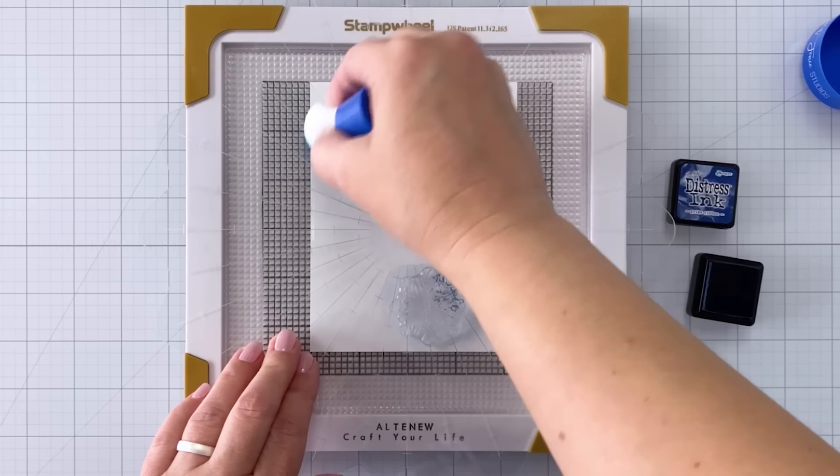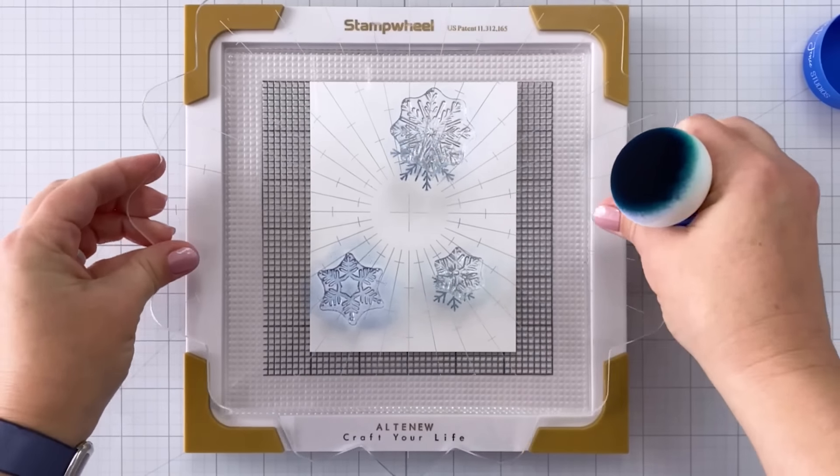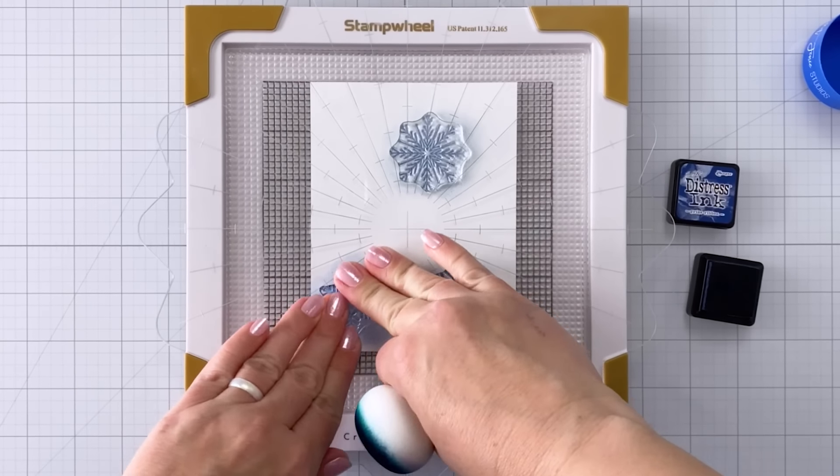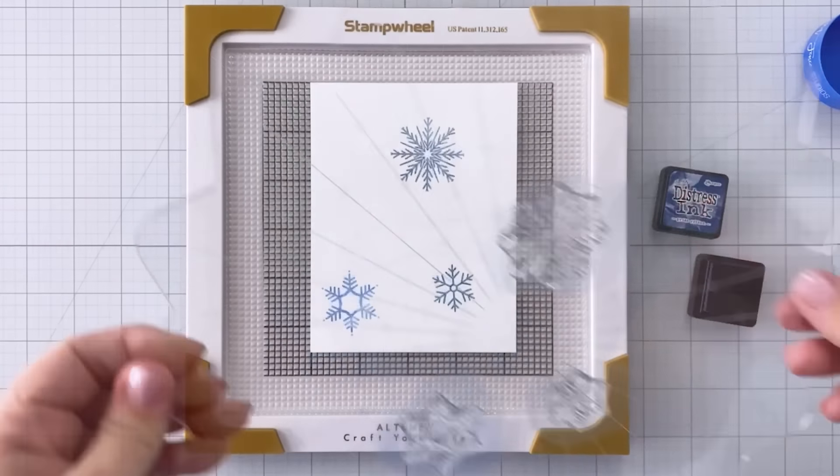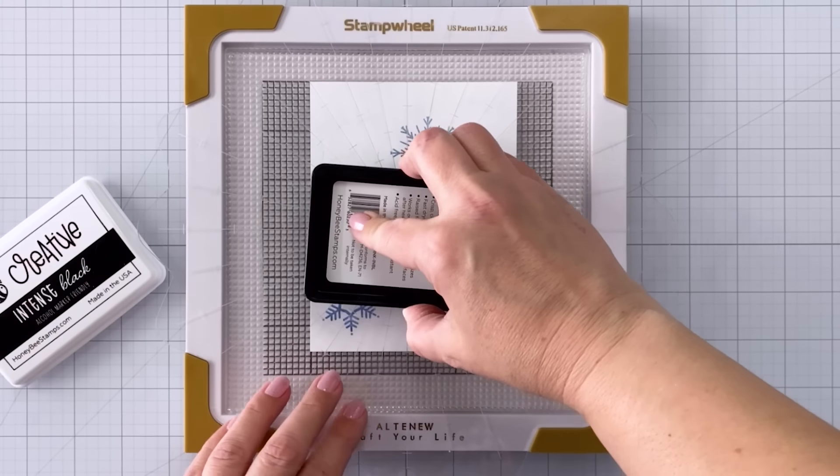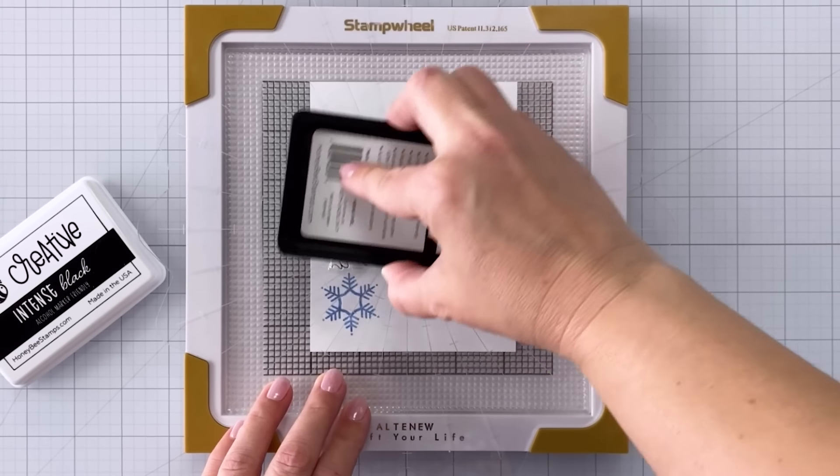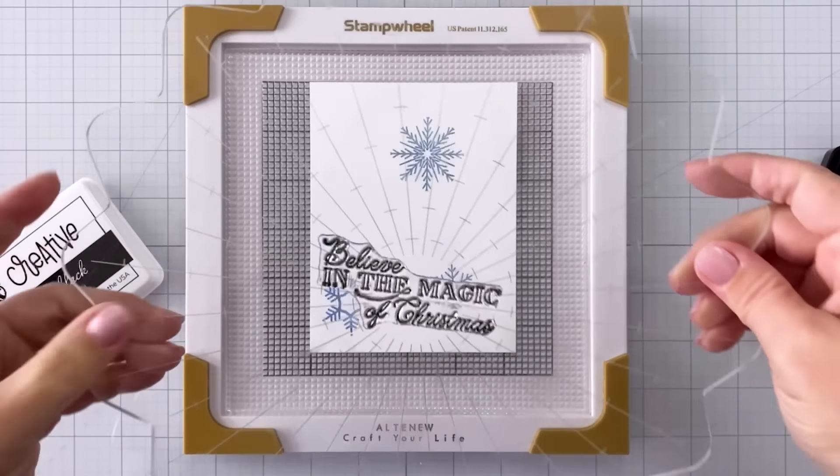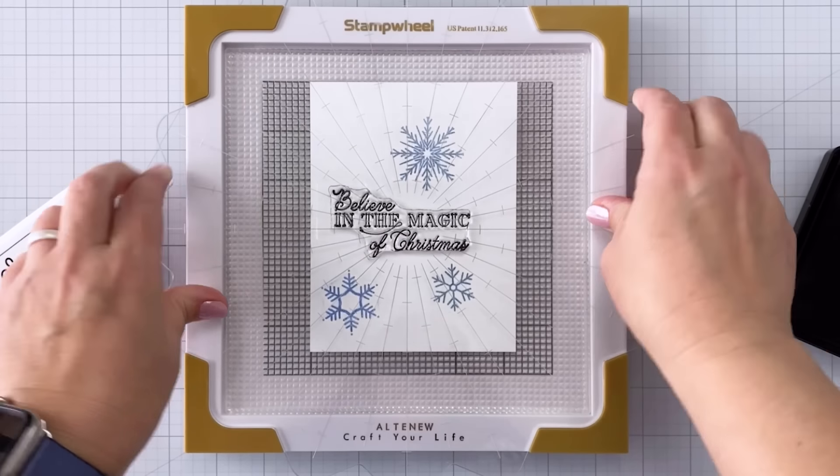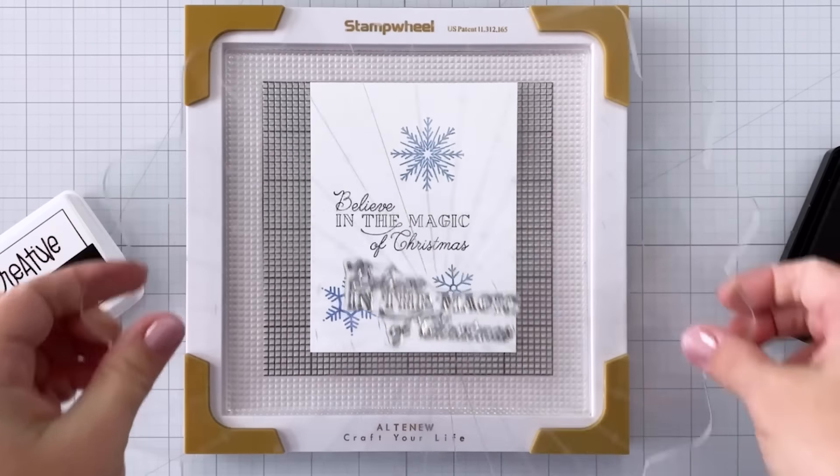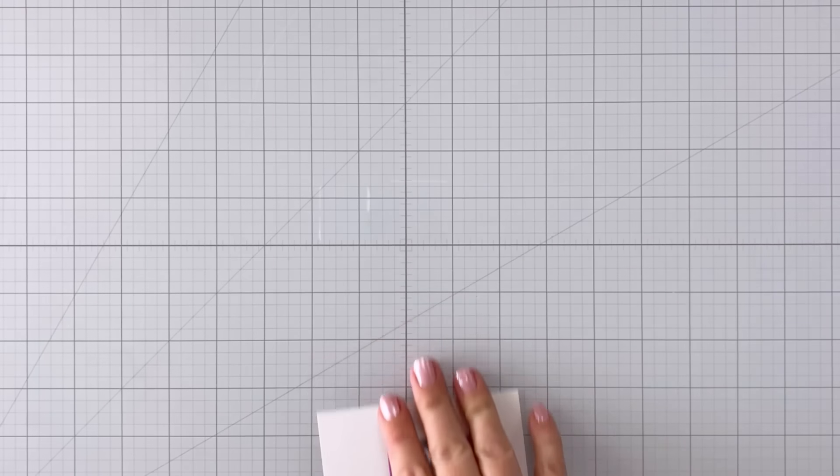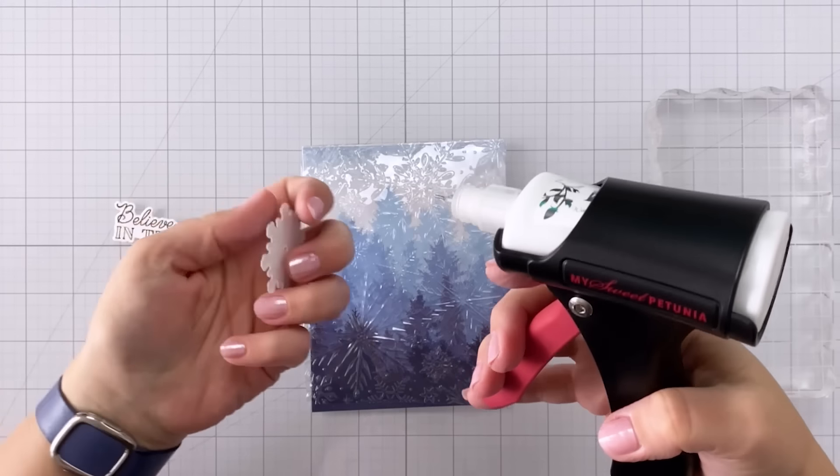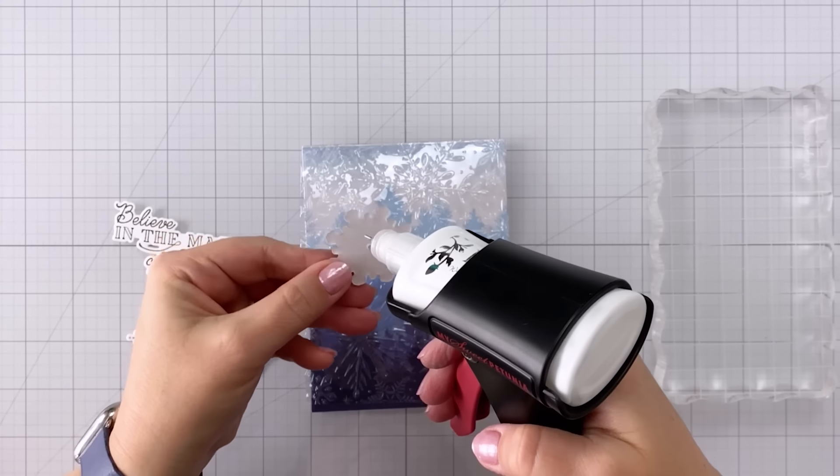To get some really nice color I am actually stamping the snowflakes about three times each just so I can make sure that that blue is really vibrant on the snowflakes. Here I have my sentiment and there are some really nice sentiments in this set. This one says believe in the magic of Christmas which I thought was nice with the snowflakes and that acetate and everything. I thought it went together really well.